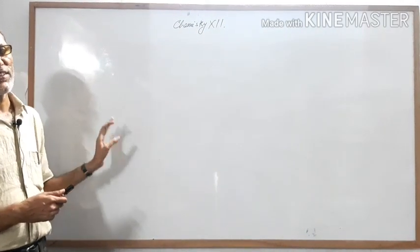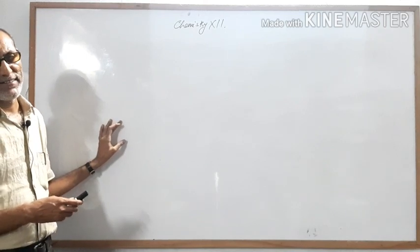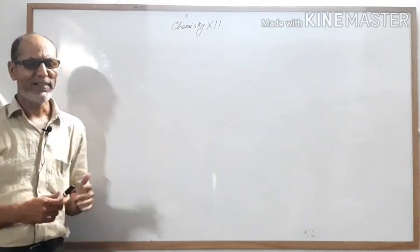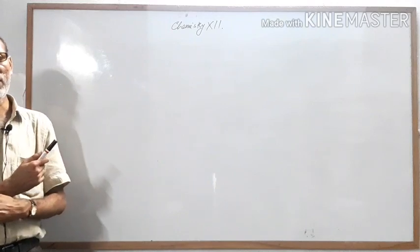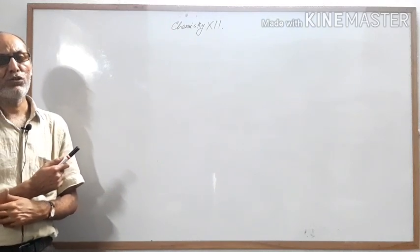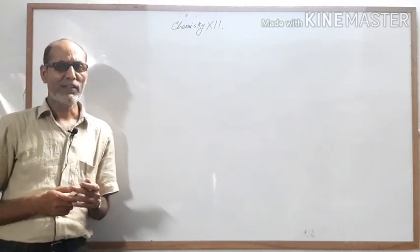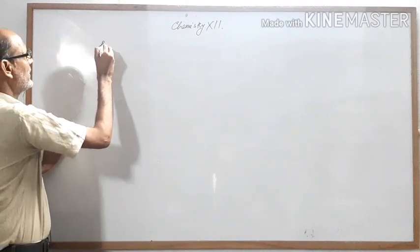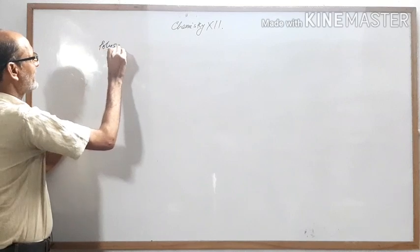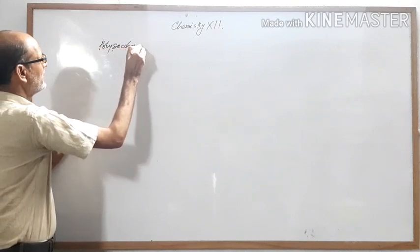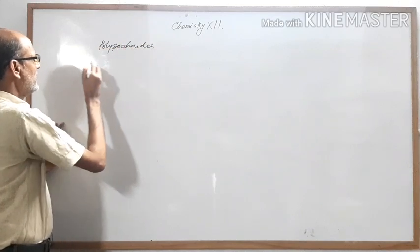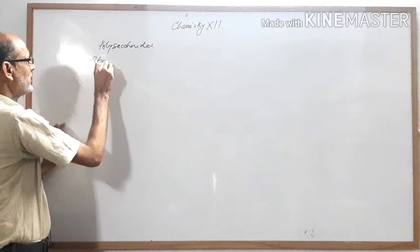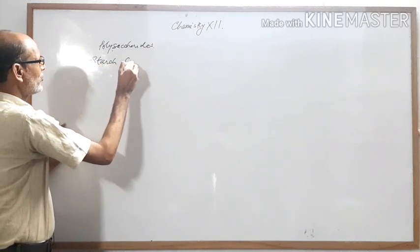The last category is polysaccharides. In this category, the carbohydrate on hydrolysis can form a large number of monosaccharides. Examples of polysaccharides are starch and cellulose.